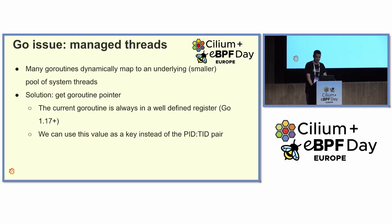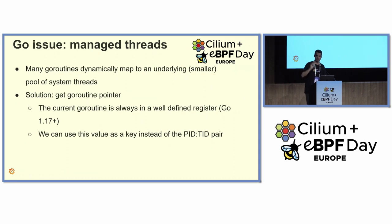Also, with managed threads — goroutines run on top of real operating system threads, but multiple goroutines run on a smaller set of threads. So to correlate a function start and a function end, we cannot relate them by thread ID. Fortunately, we can know the current goroutine, which in Go is always defined in a standard register. Accessing that register, we use the goroutine pointer instead of the thread ID. This is valid for Go 1.17 and later — it changed between Go 1.16 and 1.17.